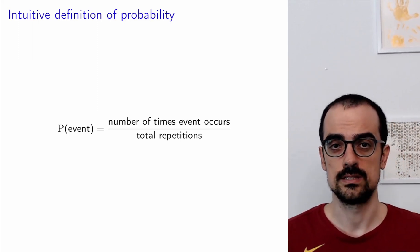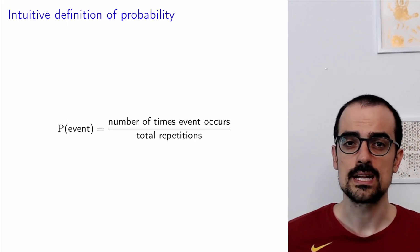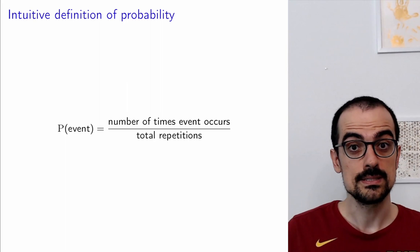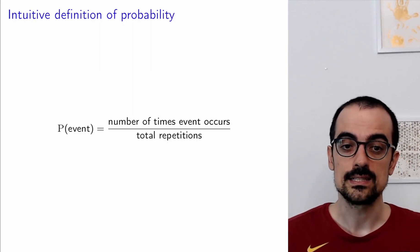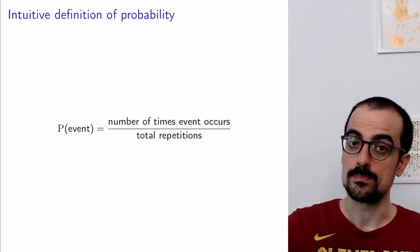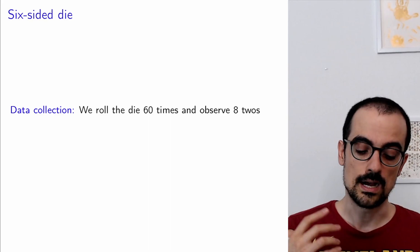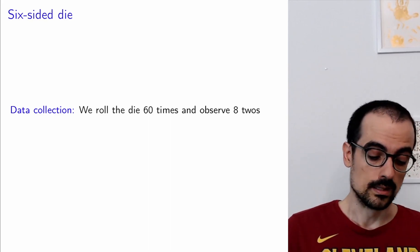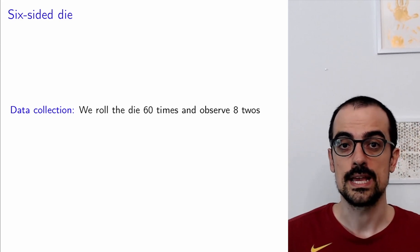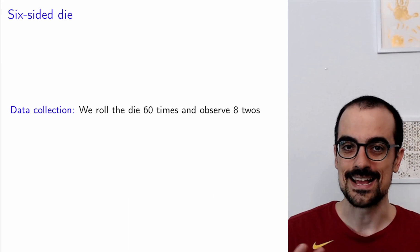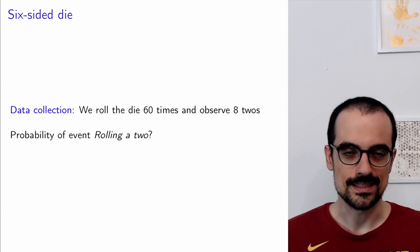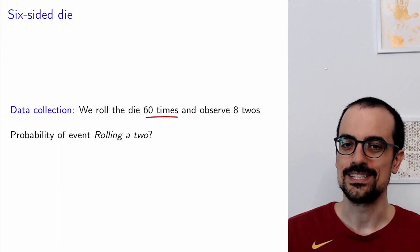We go back to our intuitive definition of probability. When we were thinking about what a probability should mean, we were interpreting the uncertain phenomenon as an experiment that can be repeated over and over. What we said is that the probability of an event is the fraction of times that we observe that event when the experiment is repeated many, many times. So how do we apply that to estimate probabilities? Imagine we have rolled a six-sided die 60 times, and we observe eight twos.